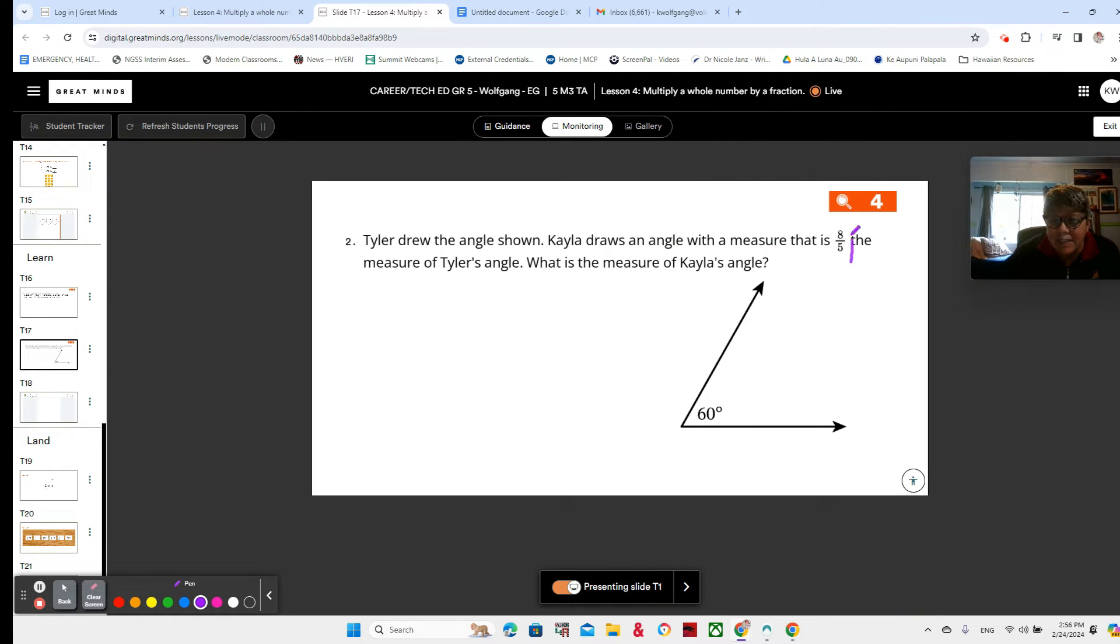Kayla drew an angle that is eight-fifths. Are you noticing that eight is bigger than five? This is going to be more than one. Eight-fifths the measure of Tyler's angle. This is Tyler's angle, and we can see from the picture that it is 60 degrees. So eight-fifths of 60. That is the same as eight times 60.